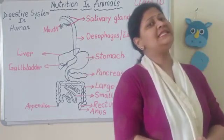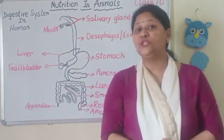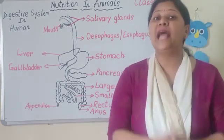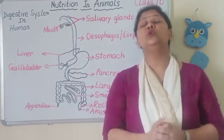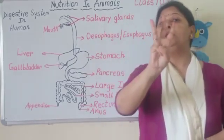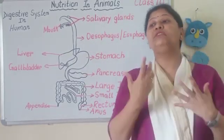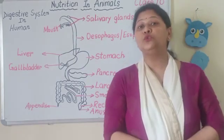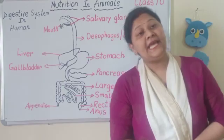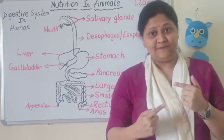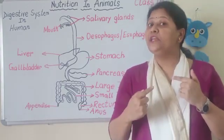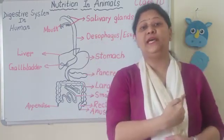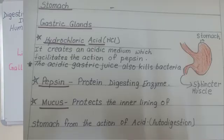Ab food pohunch gaya stomach mein. Stomach ke andar hota hai gastric gland, which provides three things. The first one is hydrochloric acid, that is HCl — ye stomach ke medium ko acidic karta hai. Acidic medium ka use hai ta ki jo ek enzyme hota hai — pepsin, jisko gastric gland secrete karta hai — usko facilitate karta hai ye acidic medium.